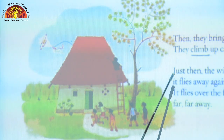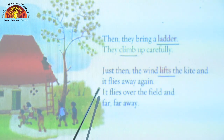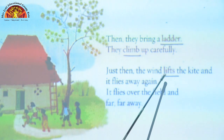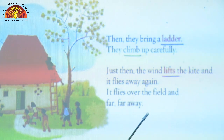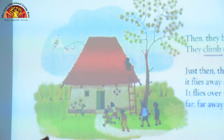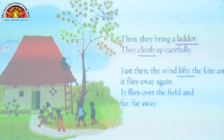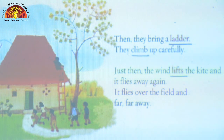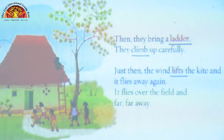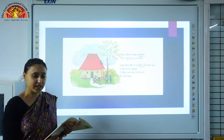Just then, the wind lifts the kite and it flies away again. Underline the word L-I-F-T-S, lifts. It flies over the field and far, far away. What happened just then? The wind lifts the kite and it flies away again, far, far away over the field. What is a field? It is an open land. Okay children, here our chapter is over.